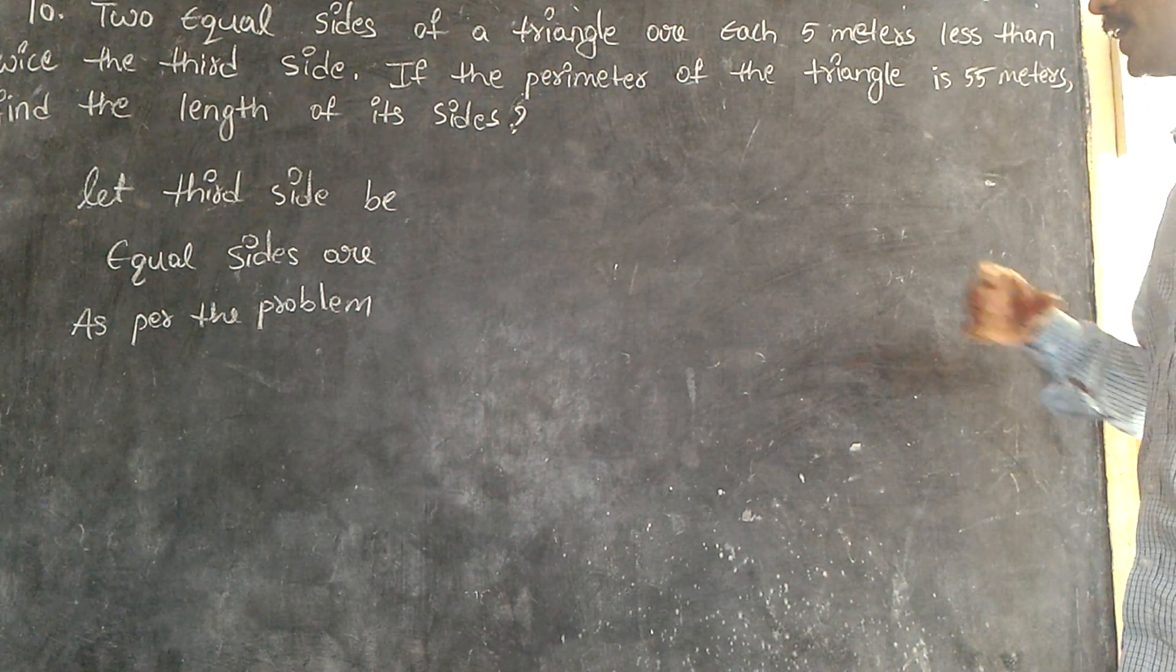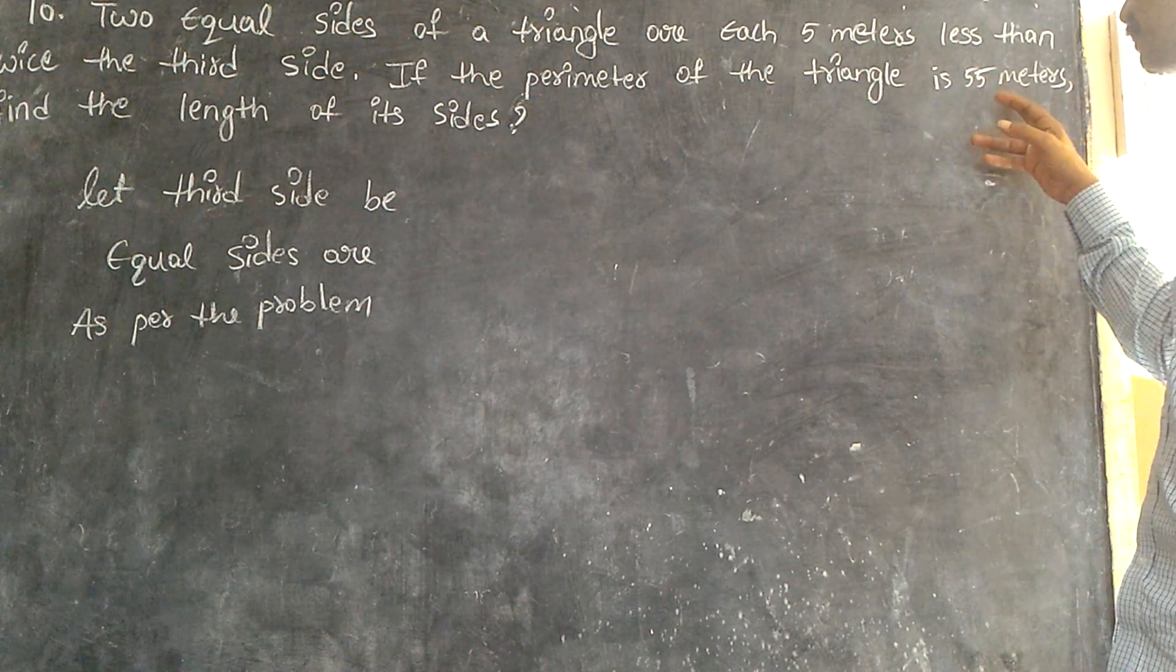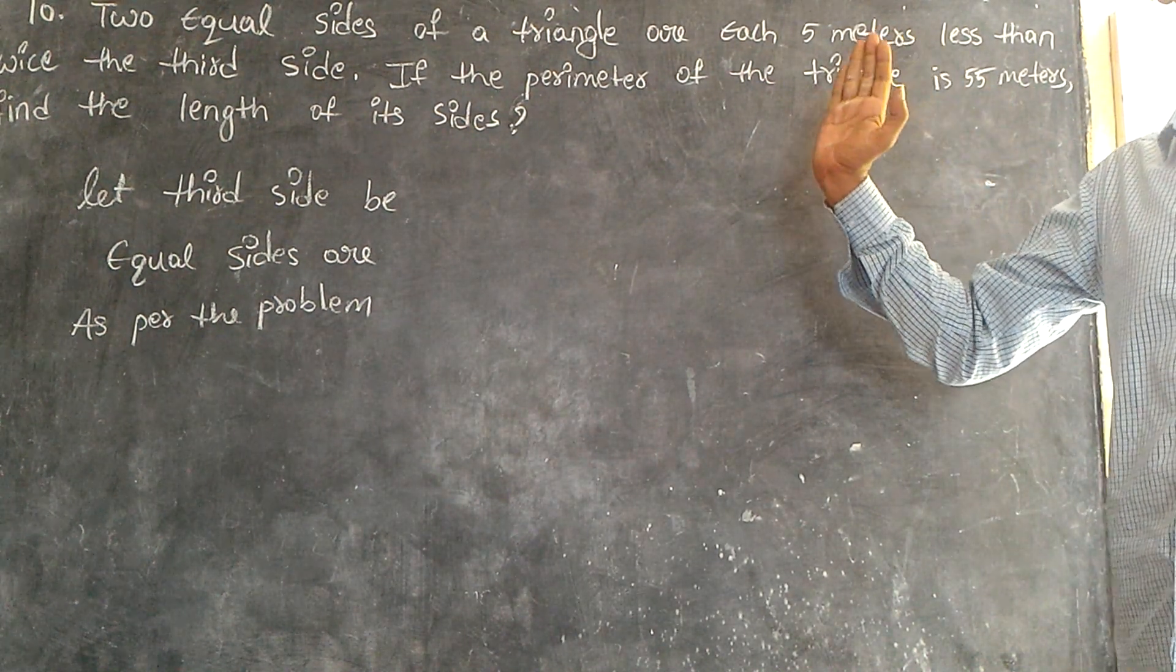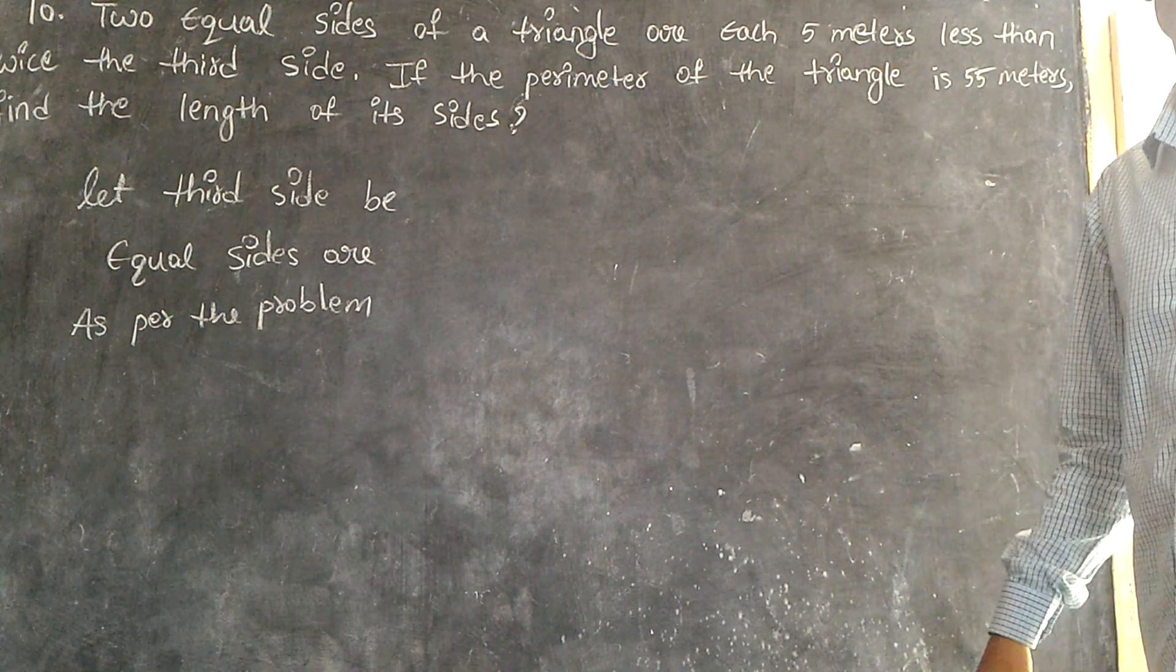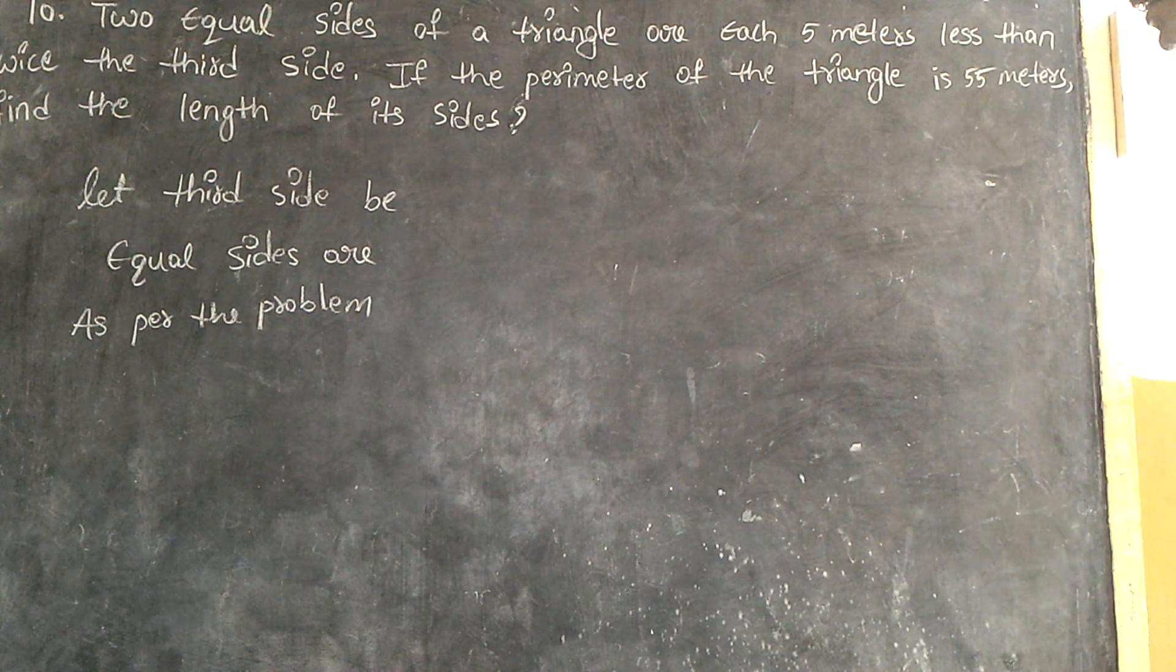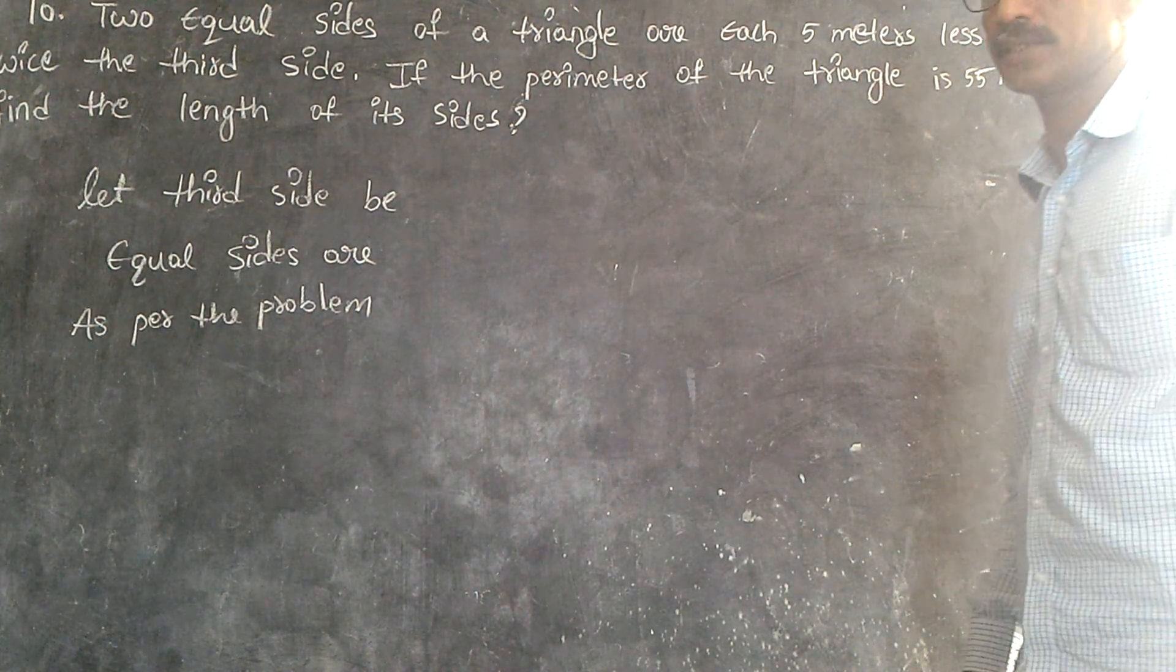If the perimeter of the triangle is 55 meters - do you know perimeter means total length of a closed figure is called perimeter - find the length of each side.